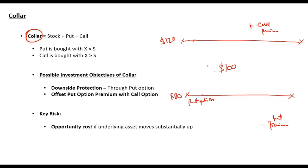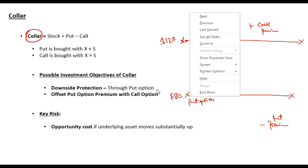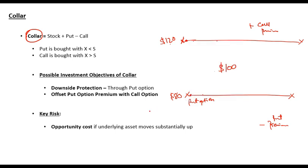In a collar, your benefit or loss will be between $80 (floor) and $120 (ceiling). The maximum price for you is $120 and the minimum price is $80. You receive a premium from the call and pay a premium for the put.